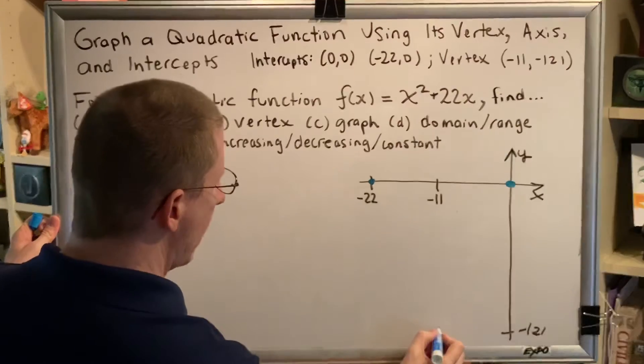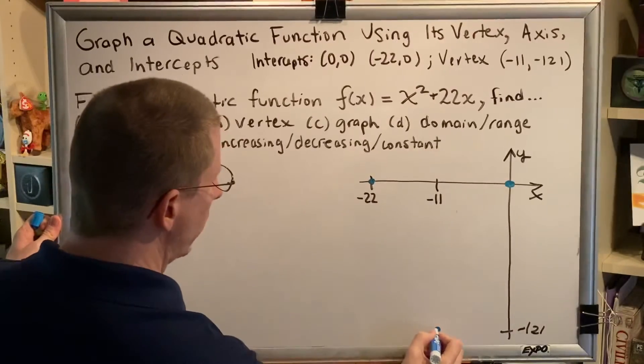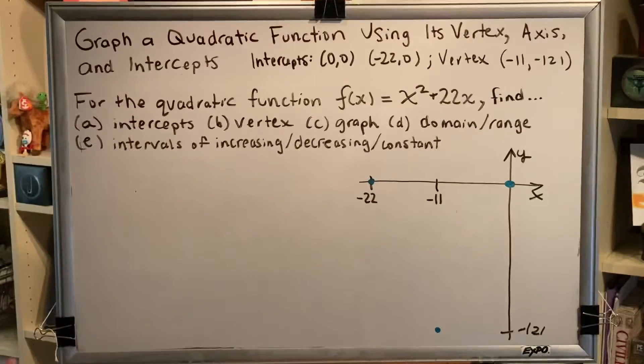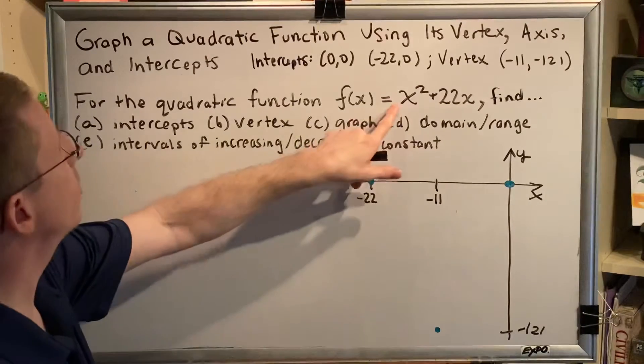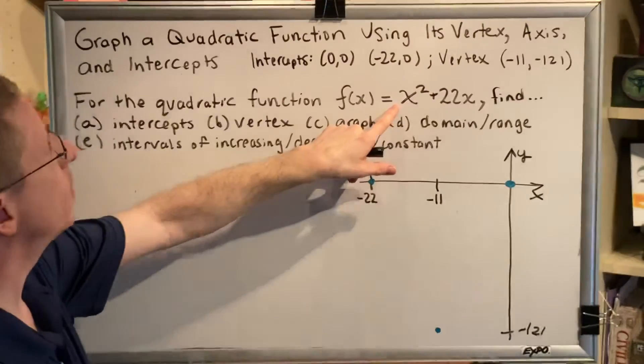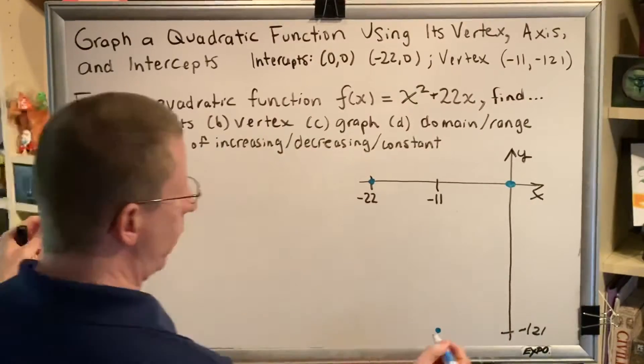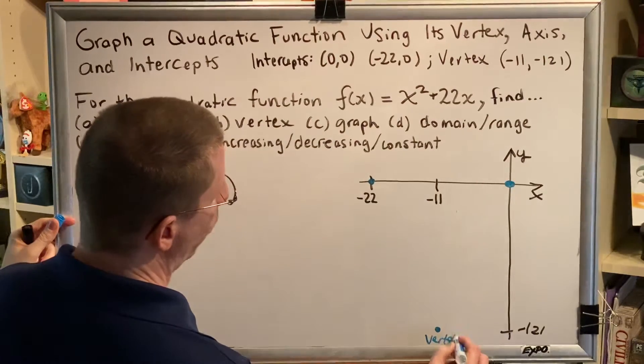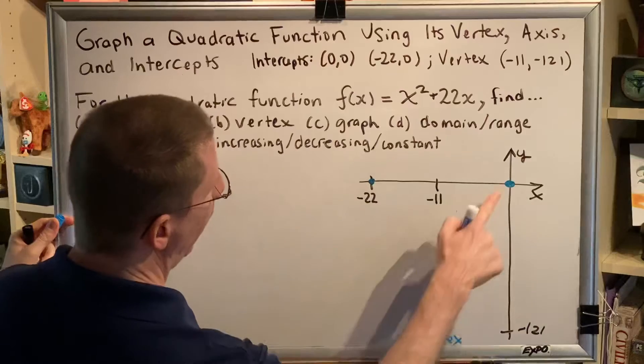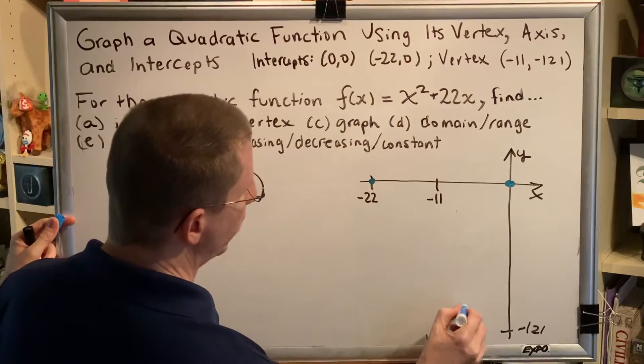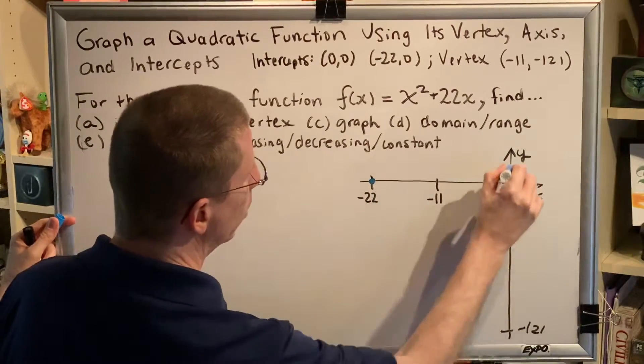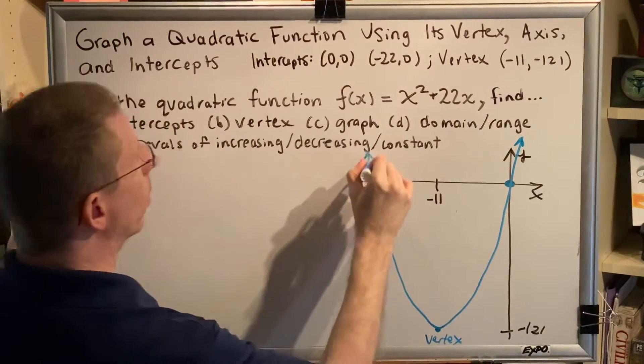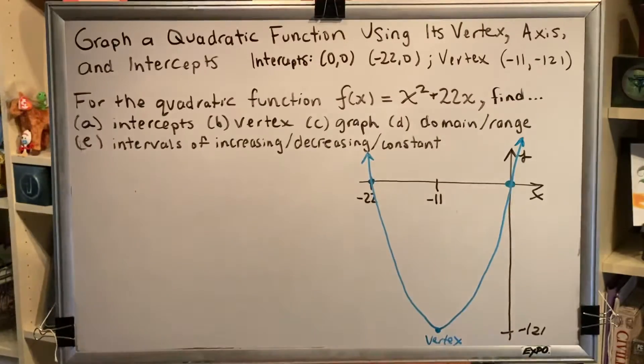And then the vertex is way down here at negative 11 comma negative 121. Now we know that this particular parabola opens up. And the reason we know that is because the coefficient a1 is positive. When it's positive, your parabola opens up. And since this is the vertex down here, we know that we have to go from the vertex up through both of these intercepts using a parabola shape. And with that, we've now created the graph of our parabola.